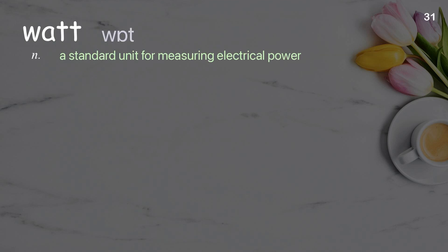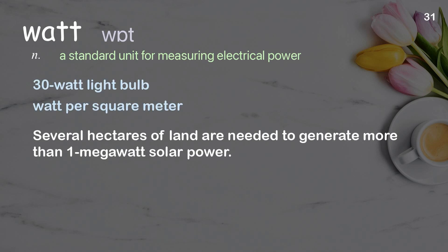Watt: a standard unit for measuring electrical power. Examples: 30-watt light bulb, watt per square meter. Several hectares of land are needed to generate more than one megawatt solar power.